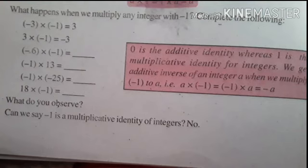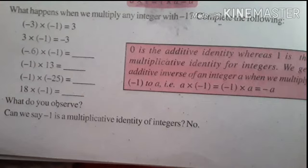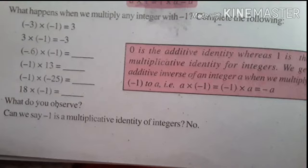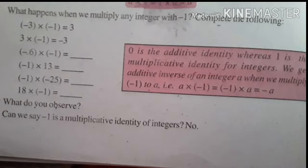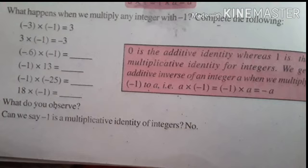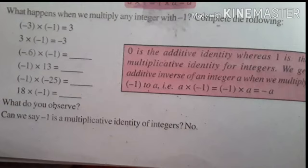We can't say minus 1 is a multiplicative identity. 0 is the additive identity, whereas 1 is the multiplicative identity for integers. We get the additive inverse of an integer A when we multiply minus 1 to A — that is, A into minus 1, or minus 1 into A, is equal to minus A. When we multiply by minus 1, the output has the opposite sign.